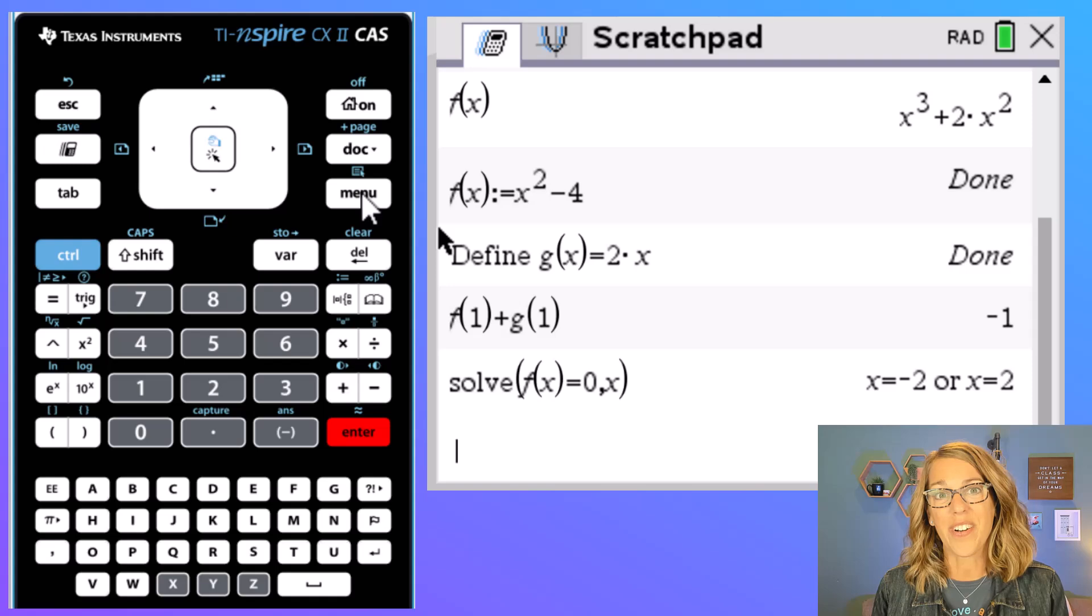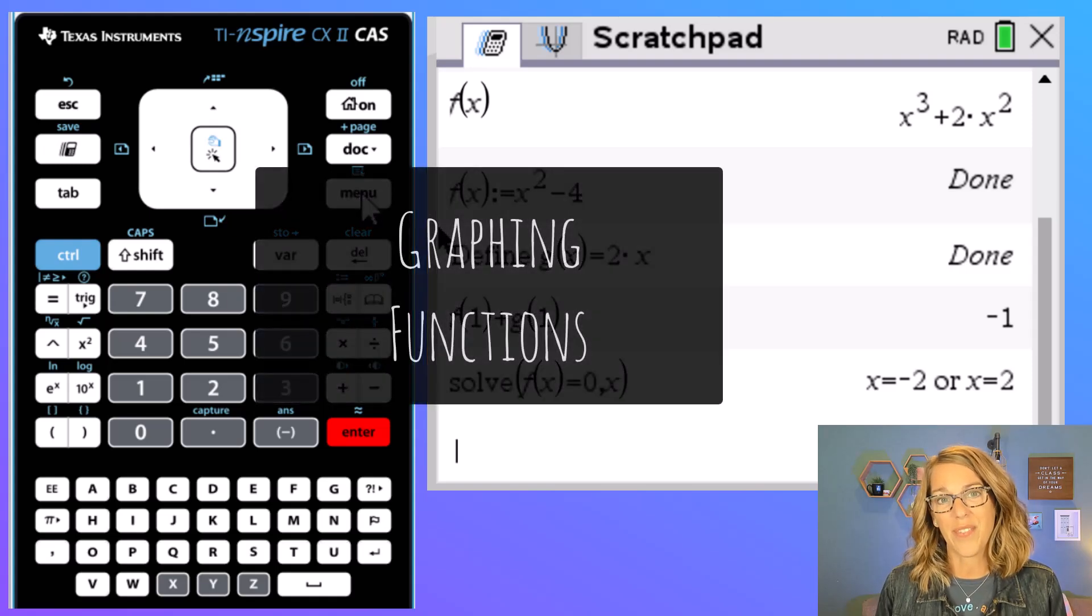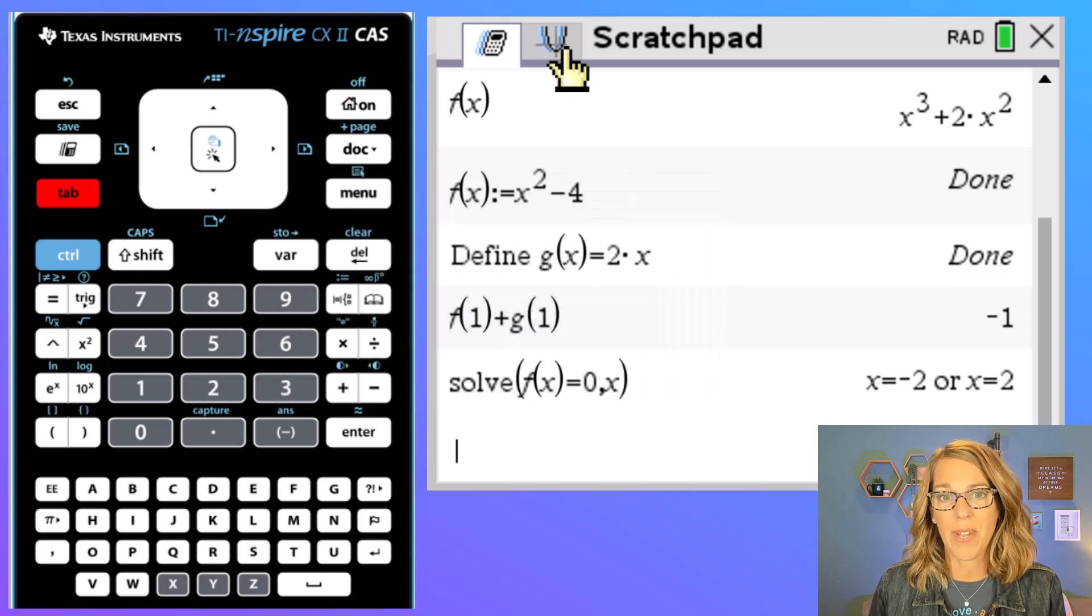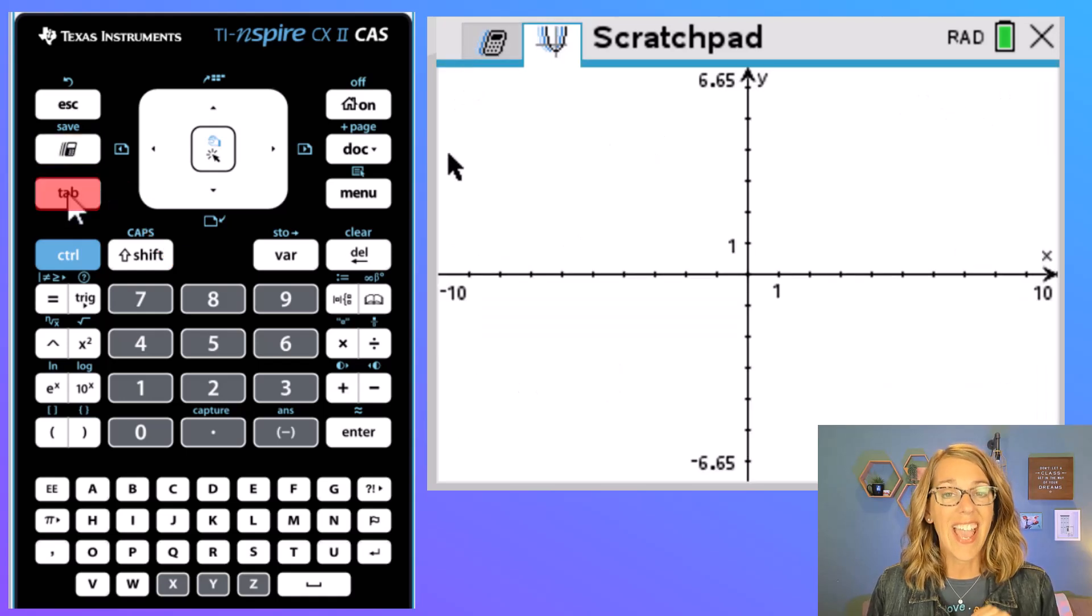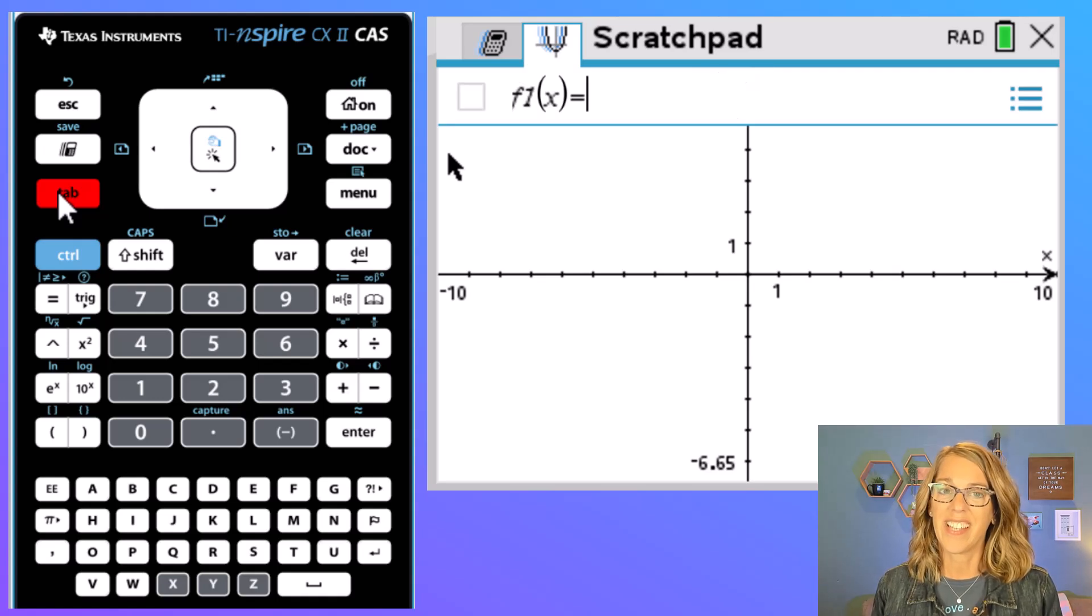Now whether you've got the CAS calculator or not, you can graph these functions as well. Let me toggle to the graph of my scratch pad and I can toggle using this button here. So toggling back and forth and I'm going to hit the tab button or you can hit the up arrow to reveal your function. So I'm going to choose tab to reveal my functions and it says what is your first function that you want to graph?